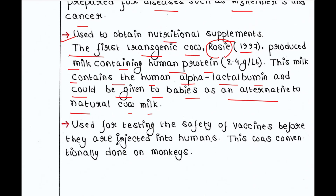Transgenic animals are also used for testing the safety of vaccines before they are injected into humans — this was conventionally done on monkeys. You can insert a gene into an animal that makes it allergenic and then test your vaccine. If the recombinant animal is okay with the vaccine, that means the vaccine works well; since the animal is allergic, if it shows no reaction, the vaccine is safe for all.